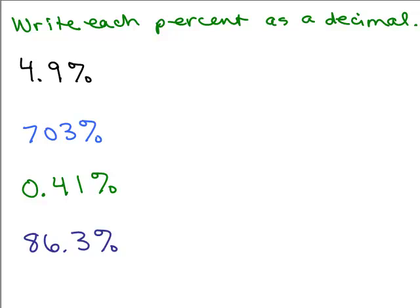Okay, hope you're back. How do we do this first one? Four point nine percent, we're dividing by 100 or move the decimal two to the left. That'll be point zero four nine.